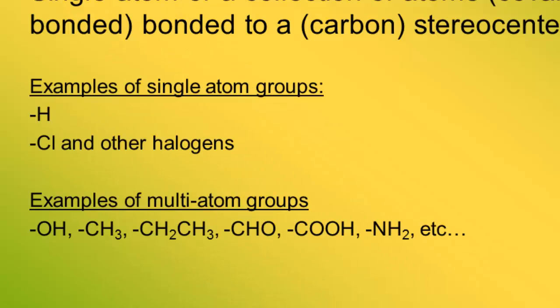A group can be a single atom or a collection of atoms bonded to the stereocenter. Examples of single-atom groups are hydrogen, chlorine, and the other halogens. Examples of multi-atom groups are the alcohol group, methyl group, ethyl group, aldehyde, carboxylic acid, amine group, etc.